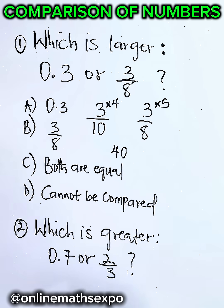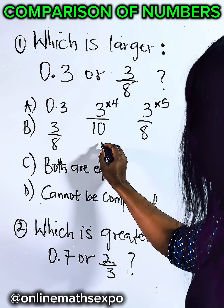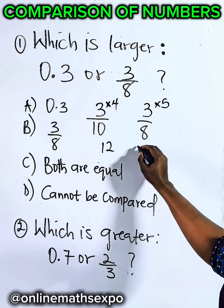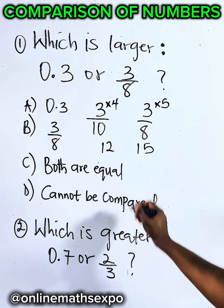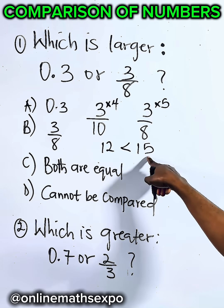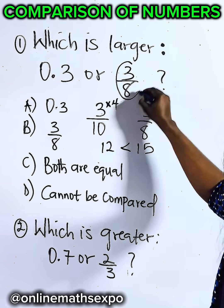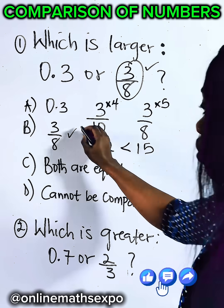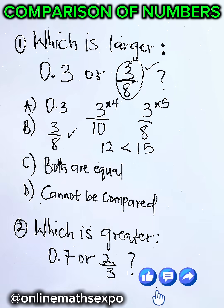And when you do that, you have 3 times 4 will give us 12, and this will give us 15. What did you see? This one is less, so the one that is larger is 15. And in that case, this one is larger, and that is option B. What do you think about this? Bye-bye.